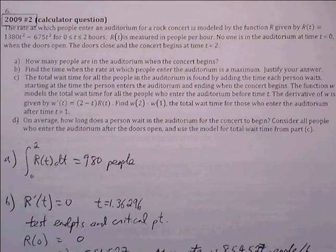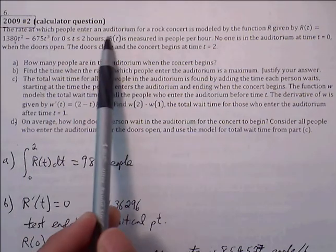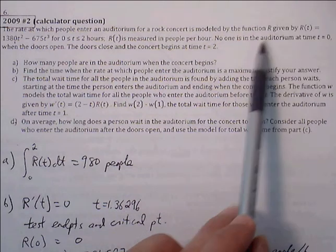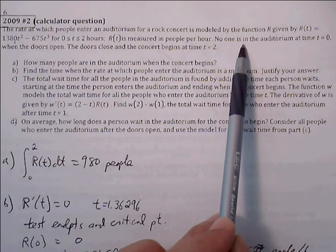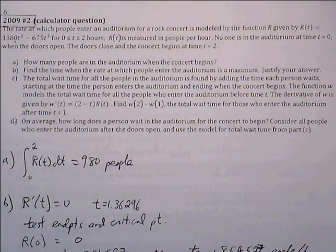This is number six from the anti-derivative word problems worksheet. The rate at which people enter into the auditorium for a rock concert is modeled by function R, given by R of T. R of T is measured in people per hour. No one is in the auditorium at time t equals 0. When the doors open, the doors close and the concert begins at t equals 2.